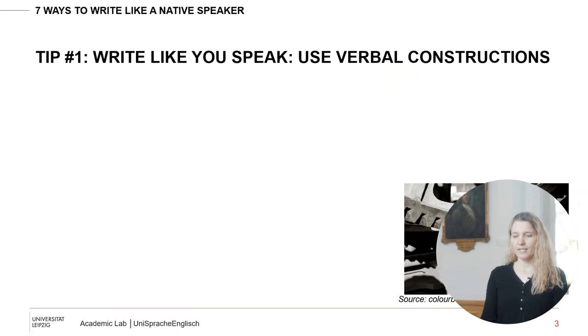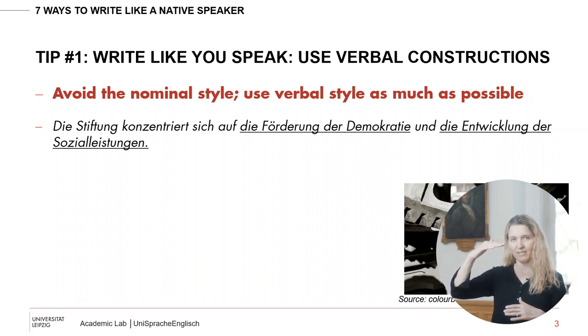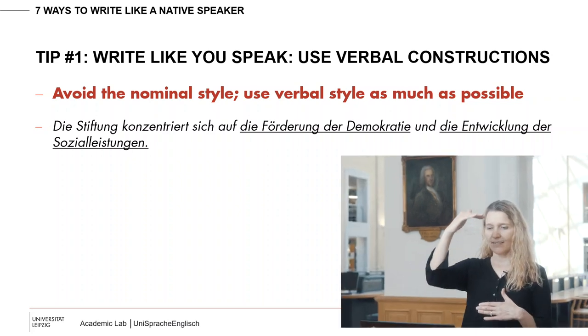The first tip to write like a native speaker is to write like you speak. Use verbal constructions — use a lot of verbs. In German, written texts use tons of nouns. We call German texts TTTs: terrible teutonic texts. The written language is a lot different than the spoken language — they're quite a far distance apart. Whereas in English, written and spoken English are closer together, and in both we prefer verbs.